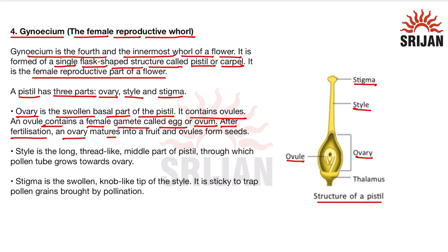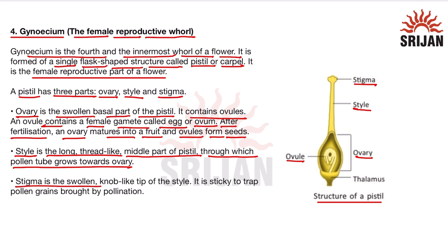After fertilization, the ovary matures into a fruit and the ovules form seeds. The style is the long thread-like middle part of the pistil through which the pollen tube grows towards the ovary, transferring pollen grains for fertilization. The stigma is the swollen knob-like tip of the style; it is sticky to trap the pollen grains brought by pollination.